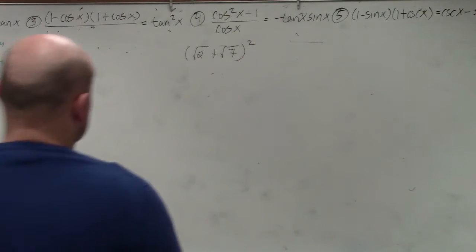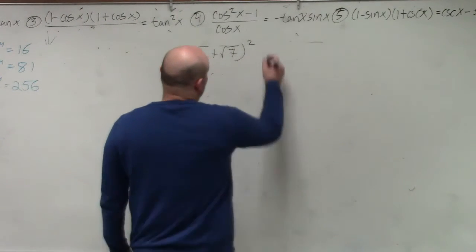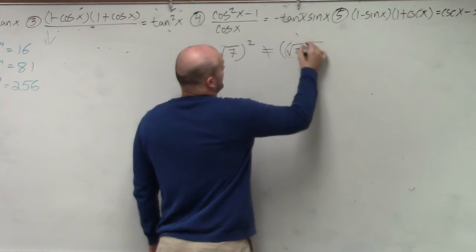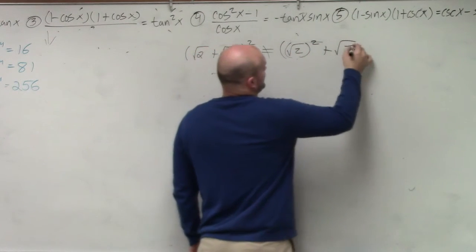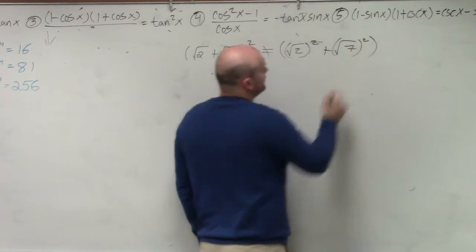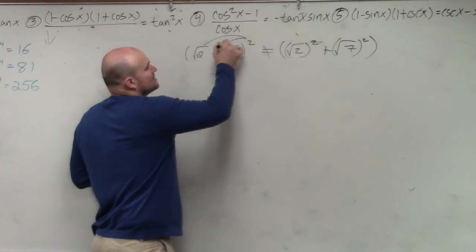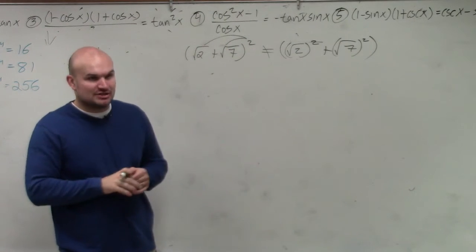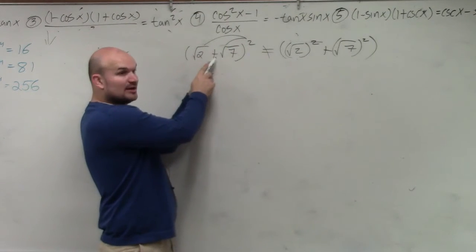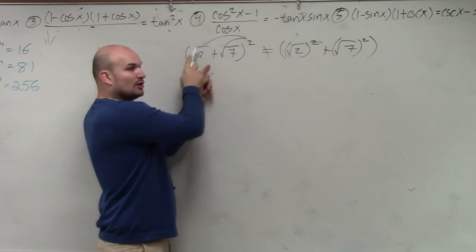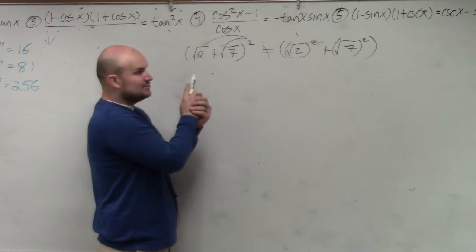The main important thing is you need to understand what this is not. This is absolutely not the square root of 2 squared plus the square root of 7 squared. You cannot distribute a power across addition or subtraction. Do you see how these terms are separated by addition? You cannot distribute a power across addition. You cannot do that.